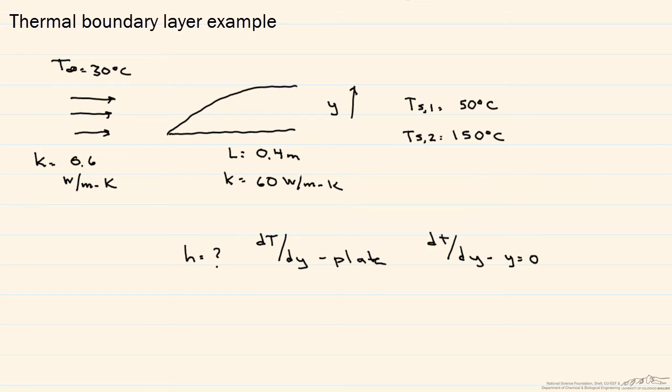Let's start by considering a flat plate. It has a thickness, and in conduction that thickness we call L, of 0.4 meters, and it has a thermal conductivity of 60 watts per meter kelvin.